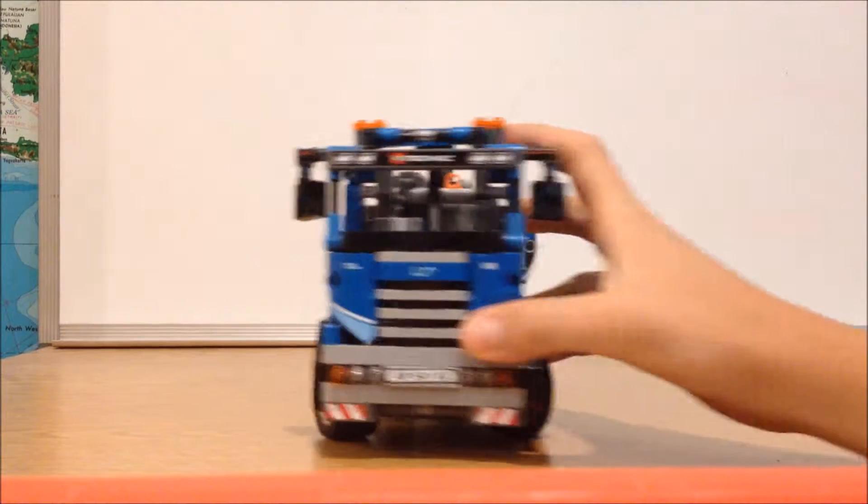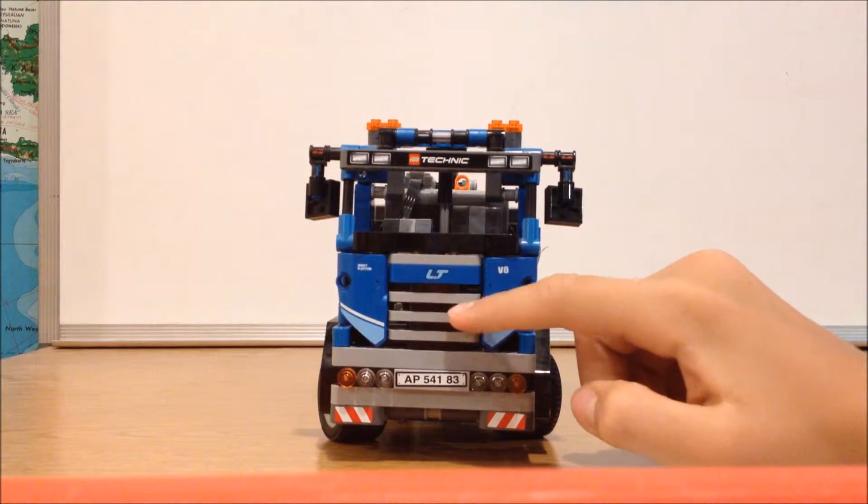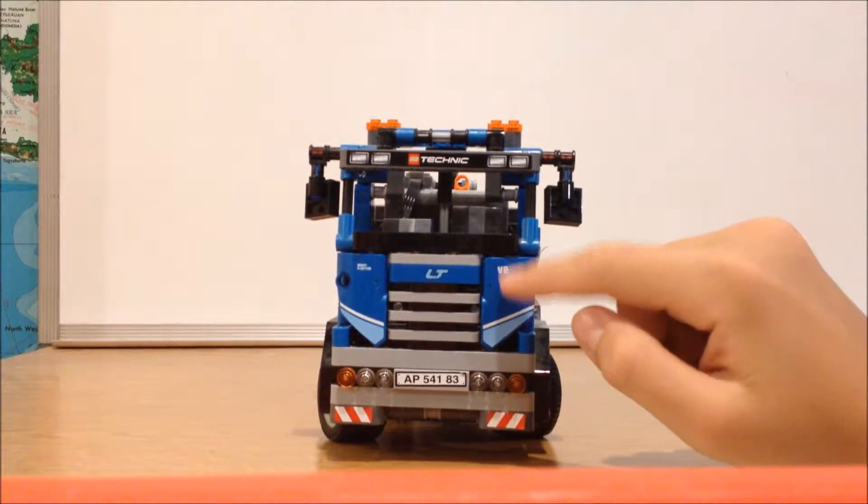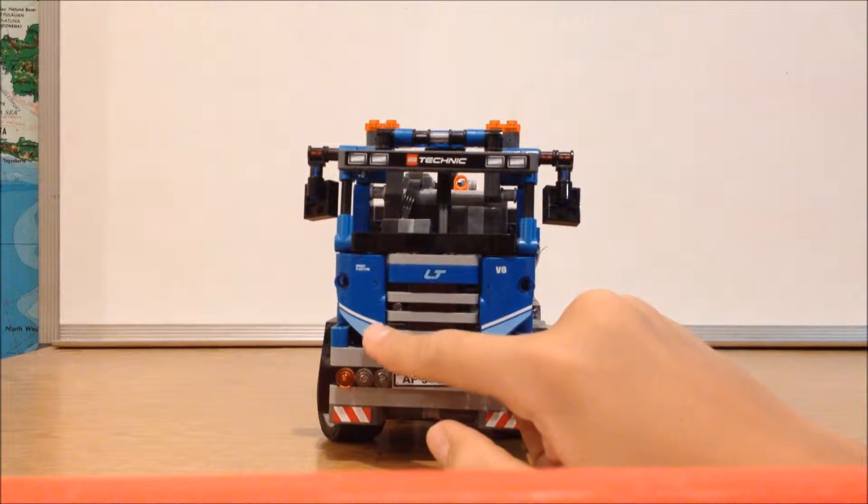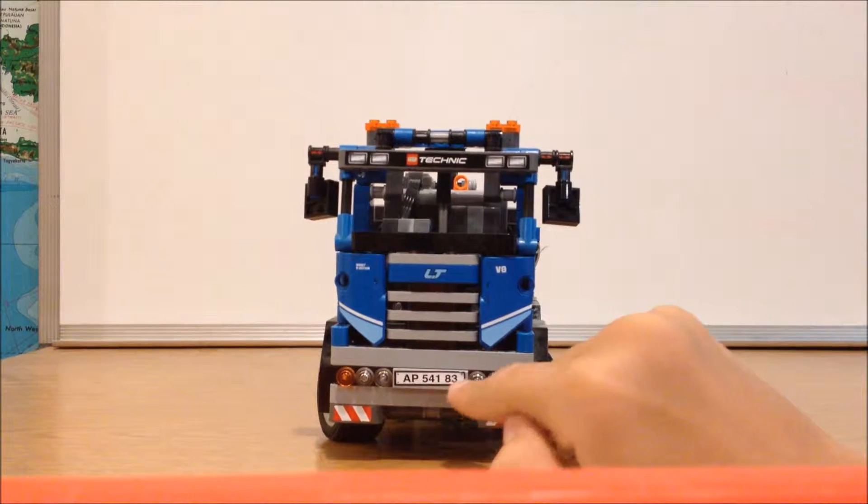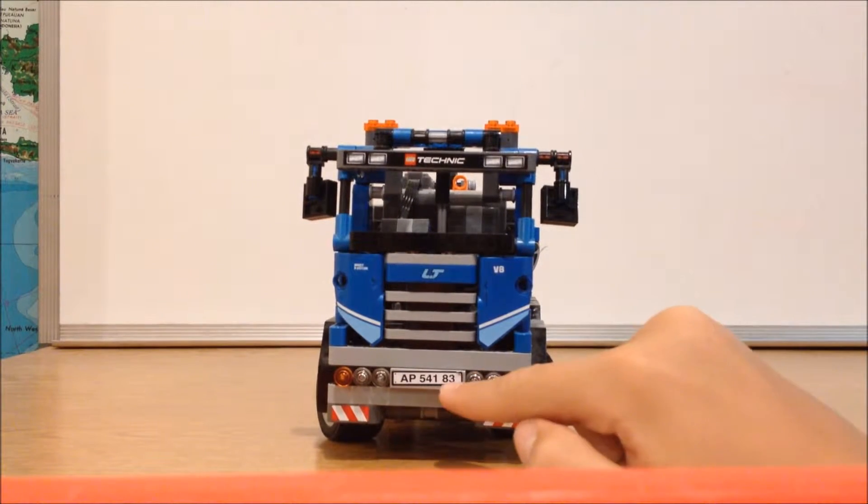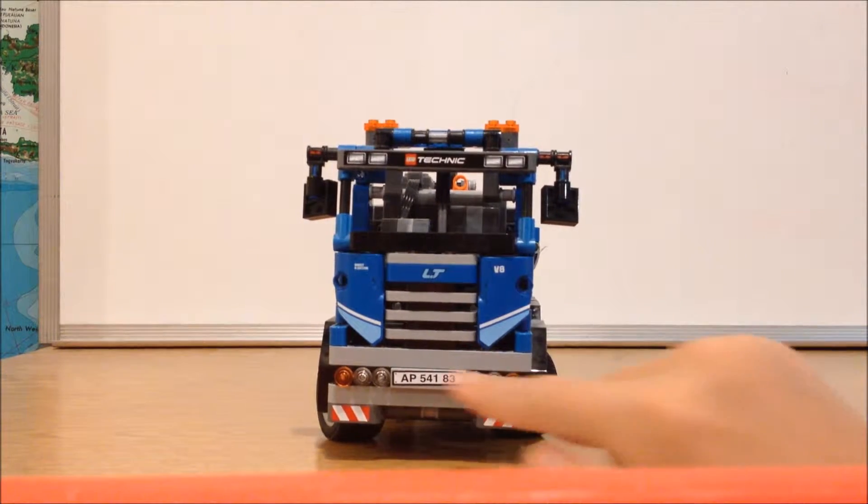Starting from the front, you have a nice plate that makes it a nice grille, a V8 sticker here, an LT and also another sticker here. You have a license plate that is not the set number but it is just a license plate. You have headlights here.